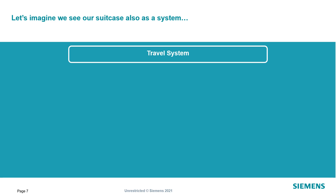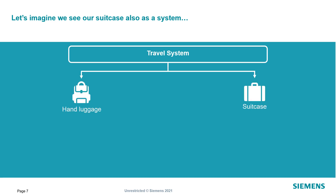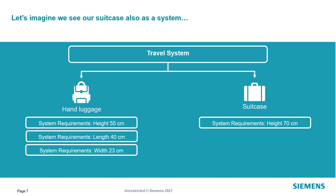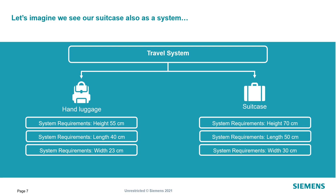So let's imagine we're talking about a travel system. And within this travel system, we also have a hand luggage and a suitcase. And especially when you're traveling via plane, we have specific requirements on these cases, on these hand luggages and on the suitcases. So we have specific system requirements. For the hand luggage, that means we are only allowed to have a bag or a small case with 55 centimeters height, 40 centimeters length, and also 23 centimeters of width — and also the same for the suitcase.